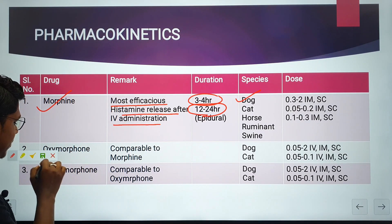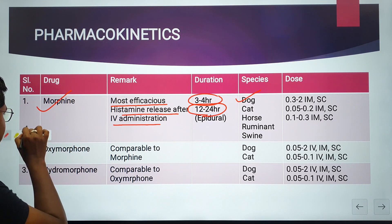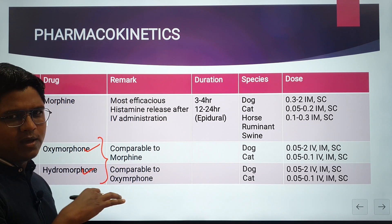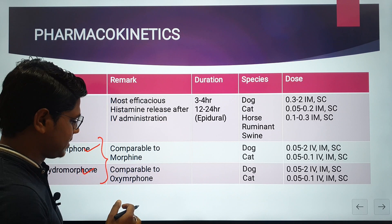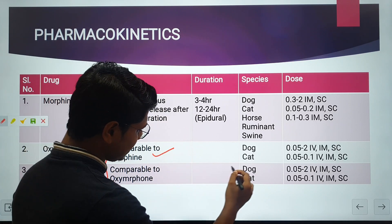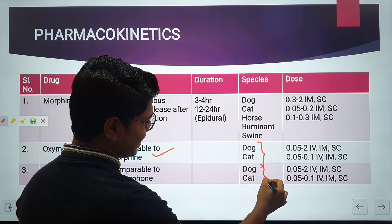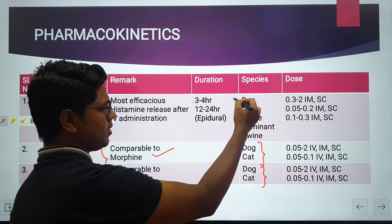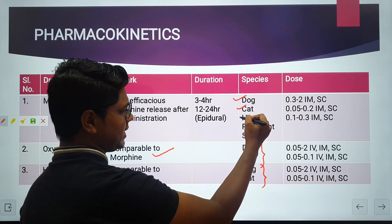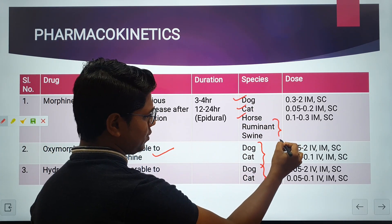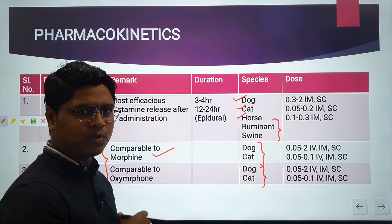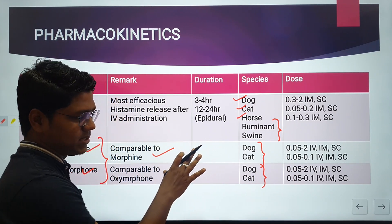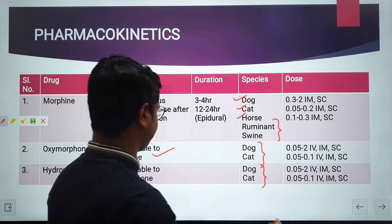Next, oxymorphone and hydromorphone. Oxymorphone is similar to morphine in its pharmacological profile. These drugs are used primarily in dogs and cats. Dose rates for ruminants have not been included because effective dose rates are yet to be established in those species according to current articles.